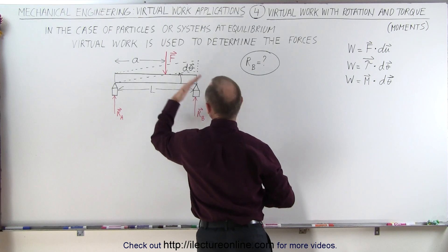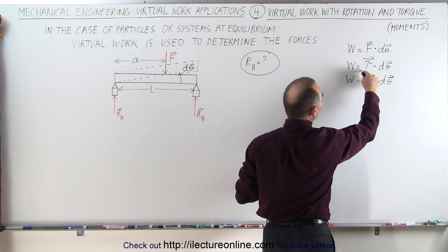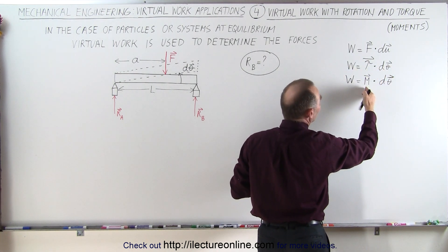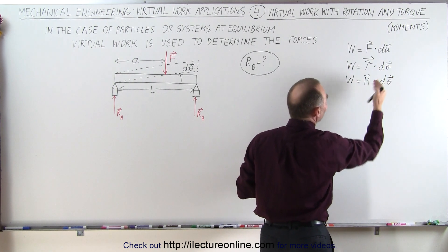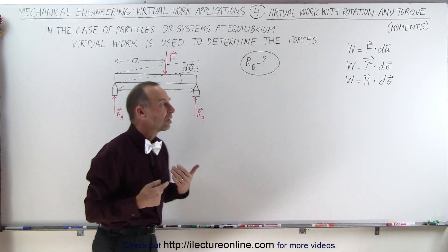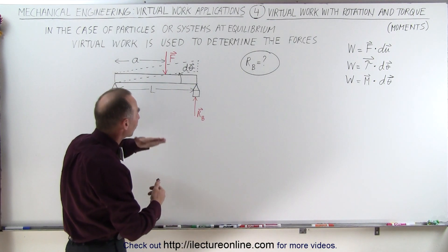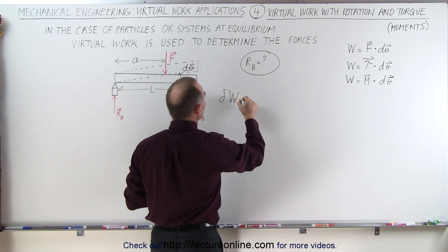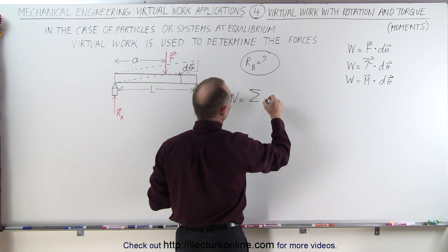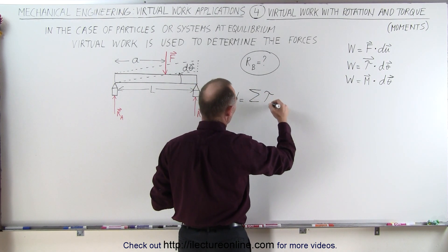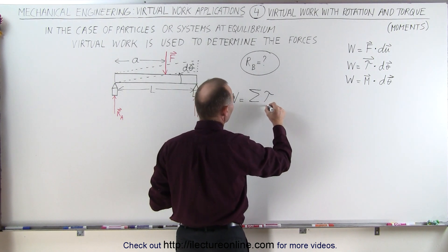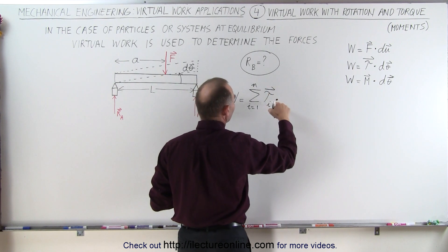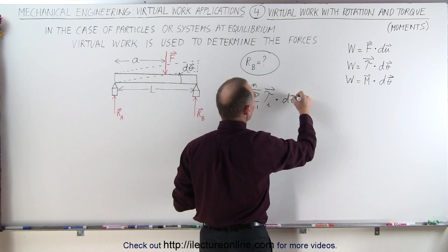So when we start rotating things, we have an angular displacement, and we multiply the torque times the angular displacement via the dot product — or if you prefer, the moment times the angular displacement. Virtual work is equal to the sum of all the torques acting on the object, from i equals 1 to n, multiplied — and that's a vector quantity — times the small angular displacement.